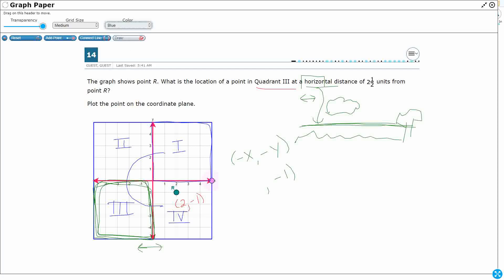Now, here's the thing. I can go 2 1⁄2 distance both left and right. So if I wanted to go to the right, I would go 1, 2, right there. So that would be 4 1⁄2, negative 1. But look where that ends me up in quadrant 4. I need to be in quadrant 3.